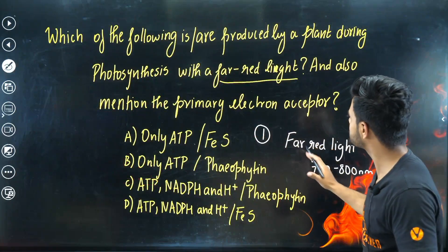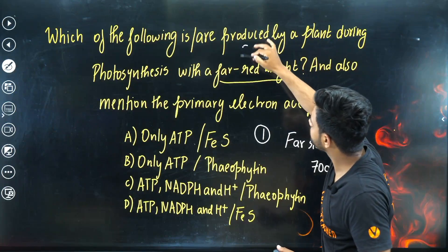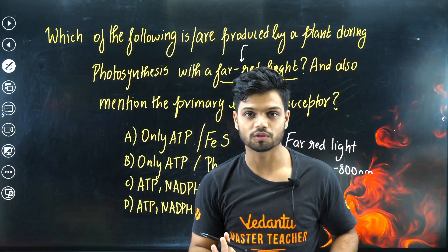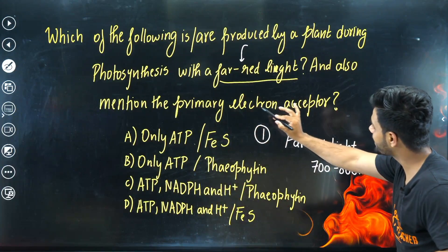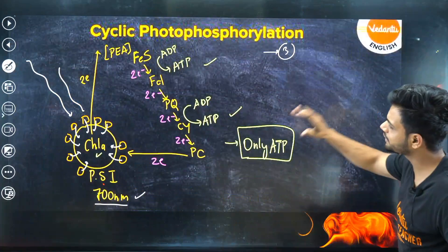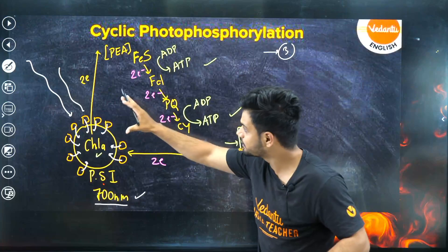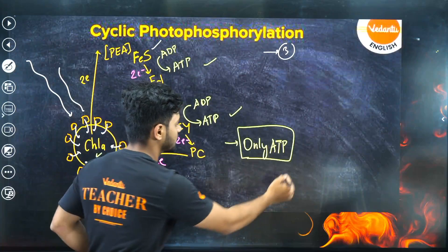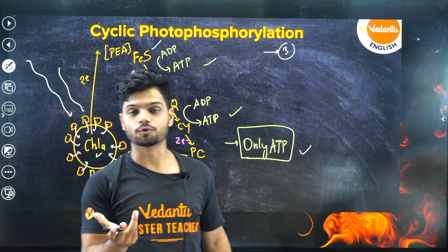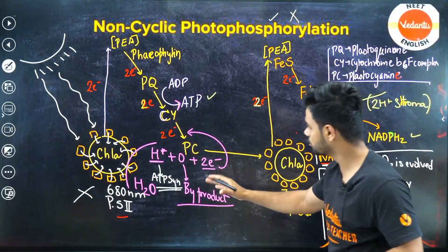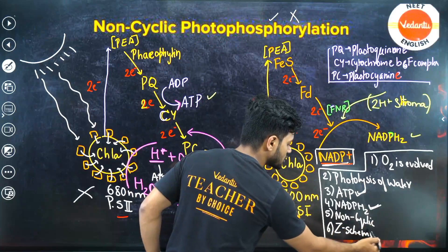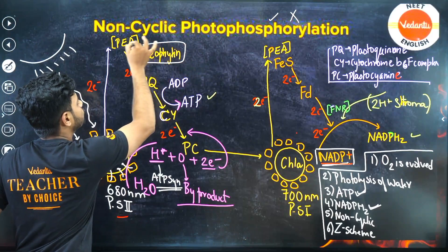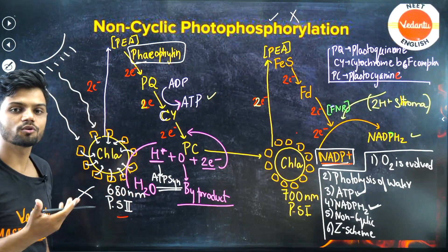So the question is really asking: what are the products of cyclic photophosphorylation, and what is the primary electron acceptor? In cyclic photophosphorylation, the primary electron acceptor is FES — iron-sulfur centers — and the only product is ATP. For comparison, if they asked about non-cyclic, the products would be ATP, NADPH, and oxygen, and the primary electron acceptor would be pheophytin.